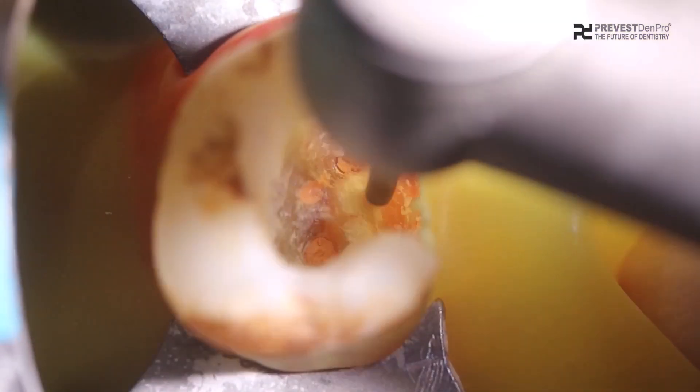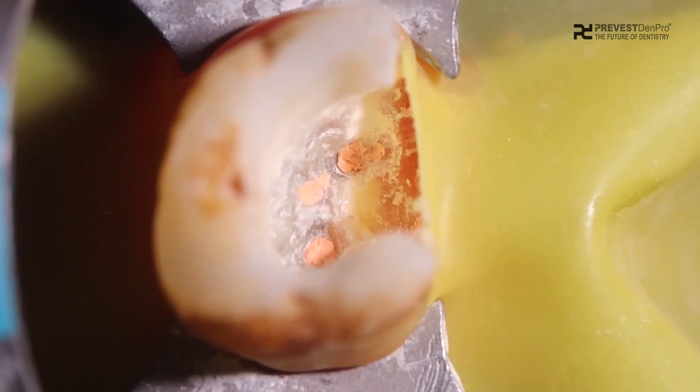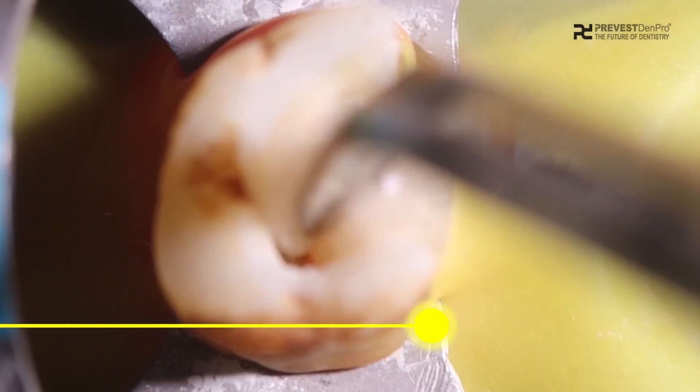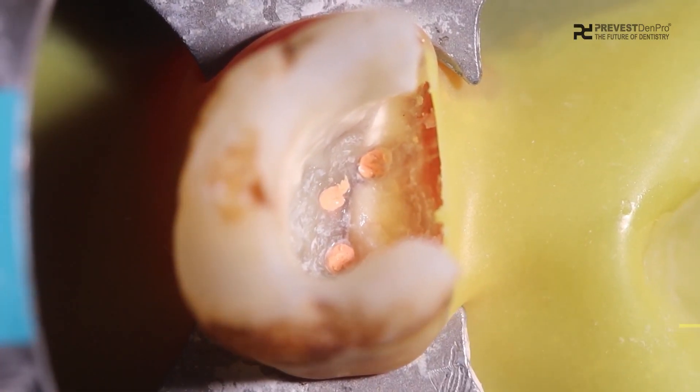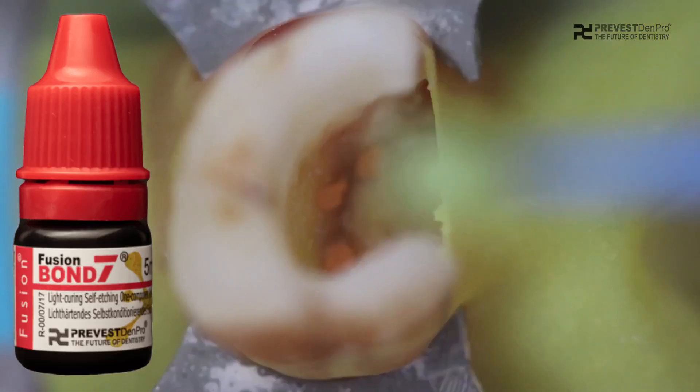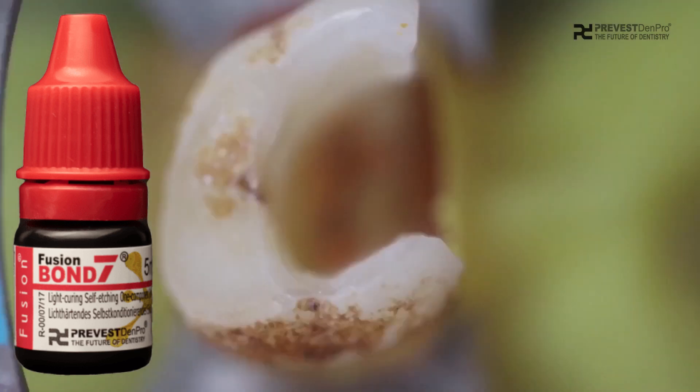After obturation with Serafil RCS and cleaning the cavity, we proceed with the post-obturation restoration with Fusion Bond 7, Fusion Flow, and Magma Entry. Fusion Bond 7 is a self-etching light-curing bonding adhesive.